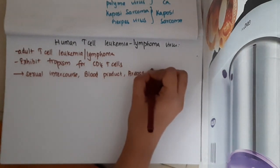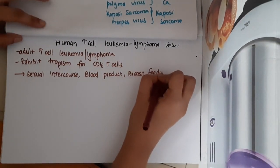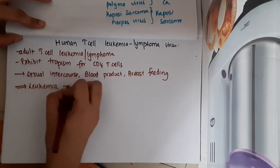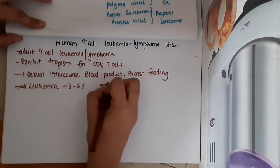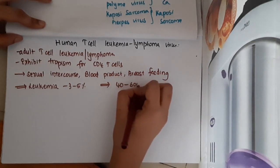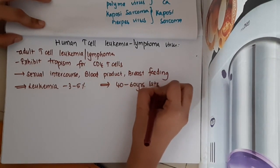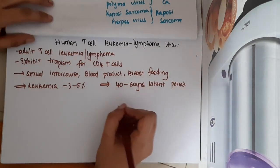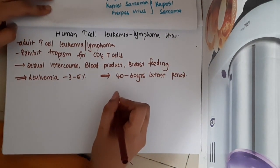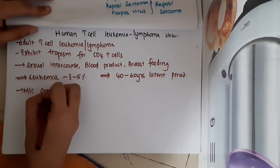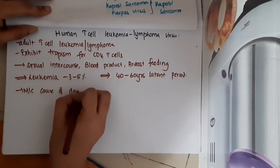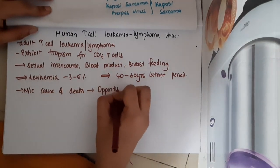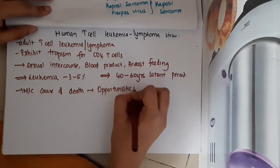Leukemia develops in around three to five percent of infected individuals, and it has a latent period of 40 to 60 years. The most common cause of death is opportunistic infections.